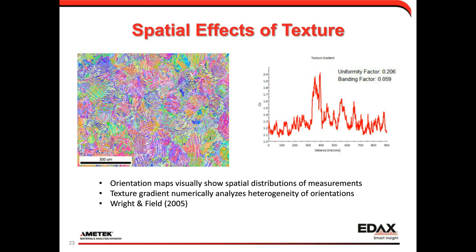If we're going to engineer local aspects of the microstructure, one thing we want to measure is the spatial inhomogeneity. The orientation map visually shows the spatial distribution, but we can quantify it with tools like texture gradient analysis, which provides a uniformity factor and a banding factor to get an idea of how similar or different the microstructure is across the measurement area.